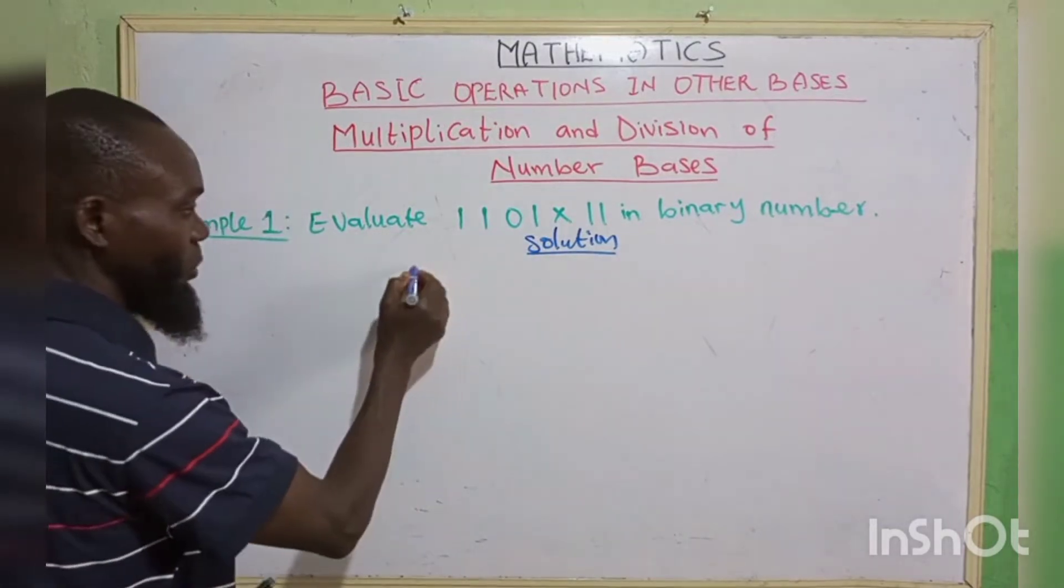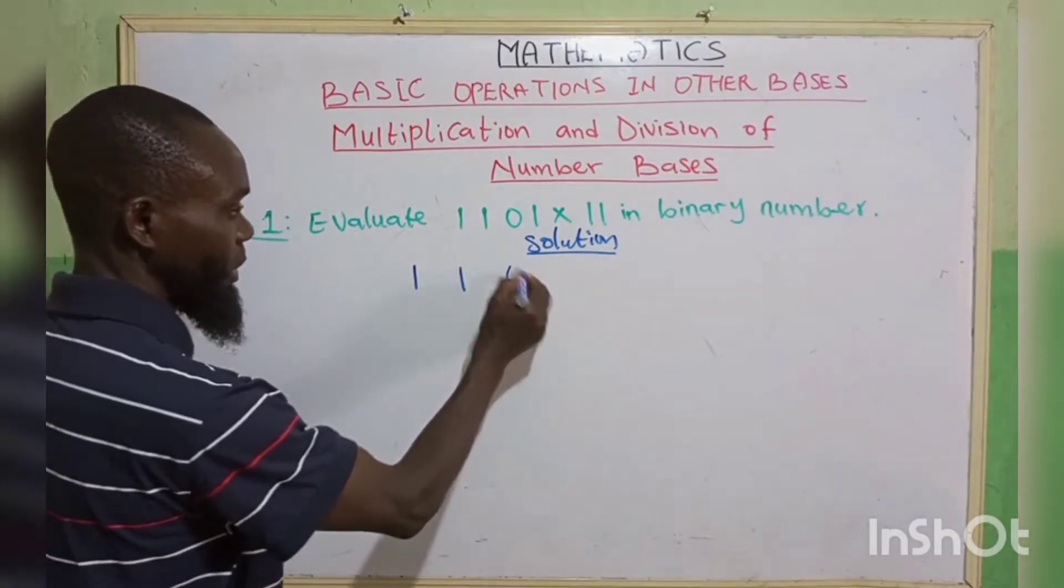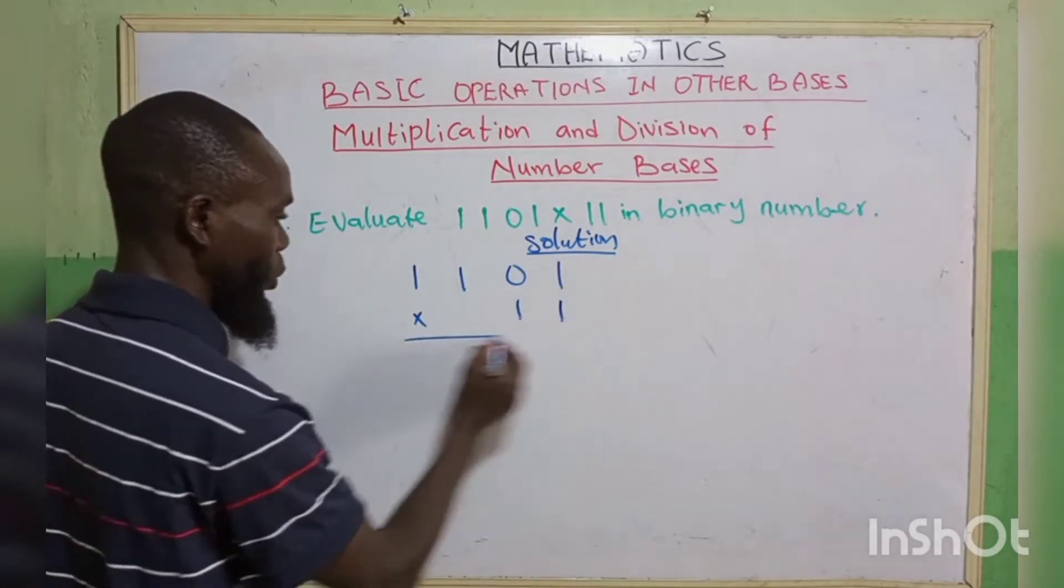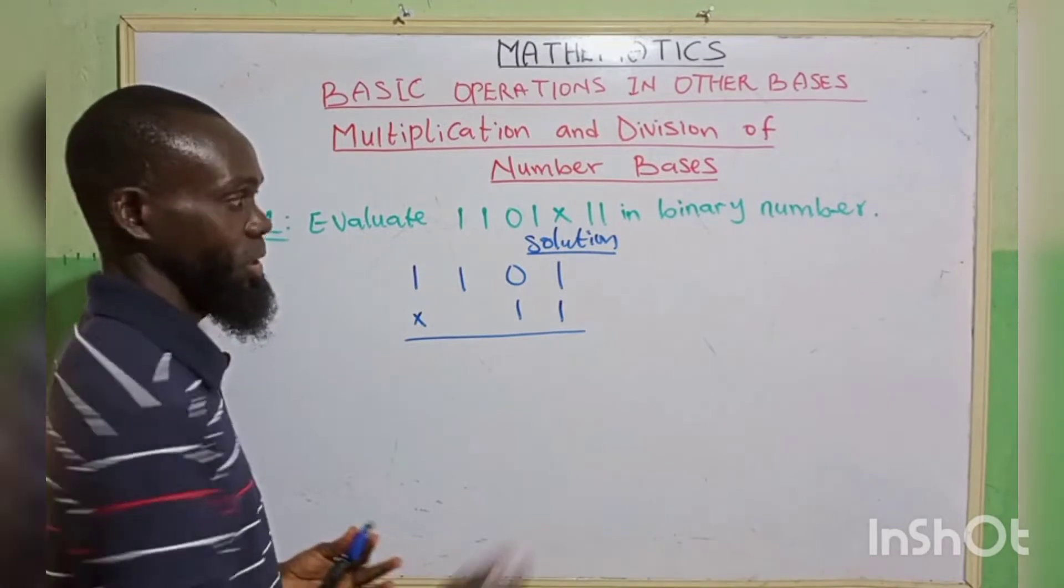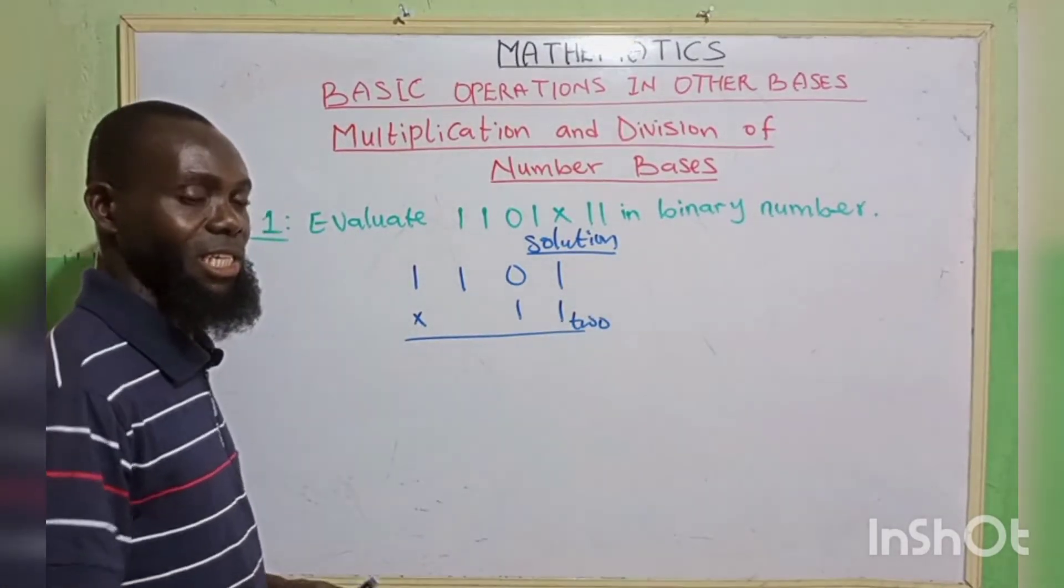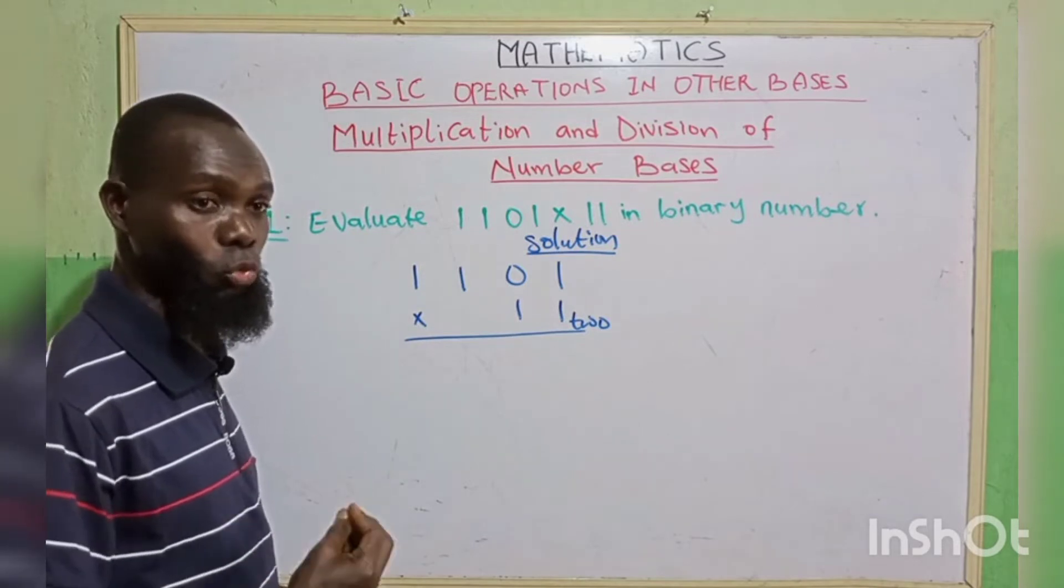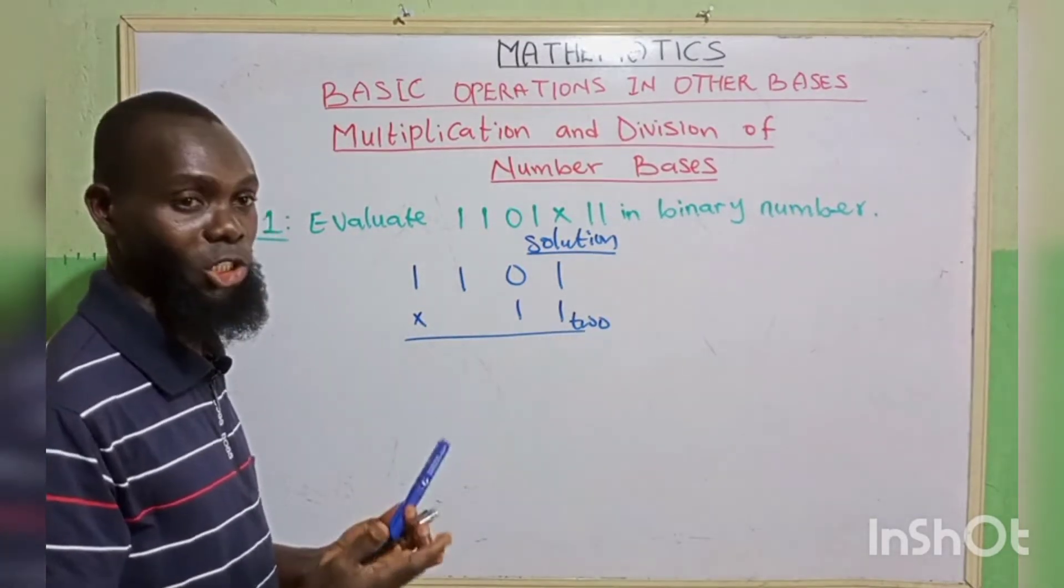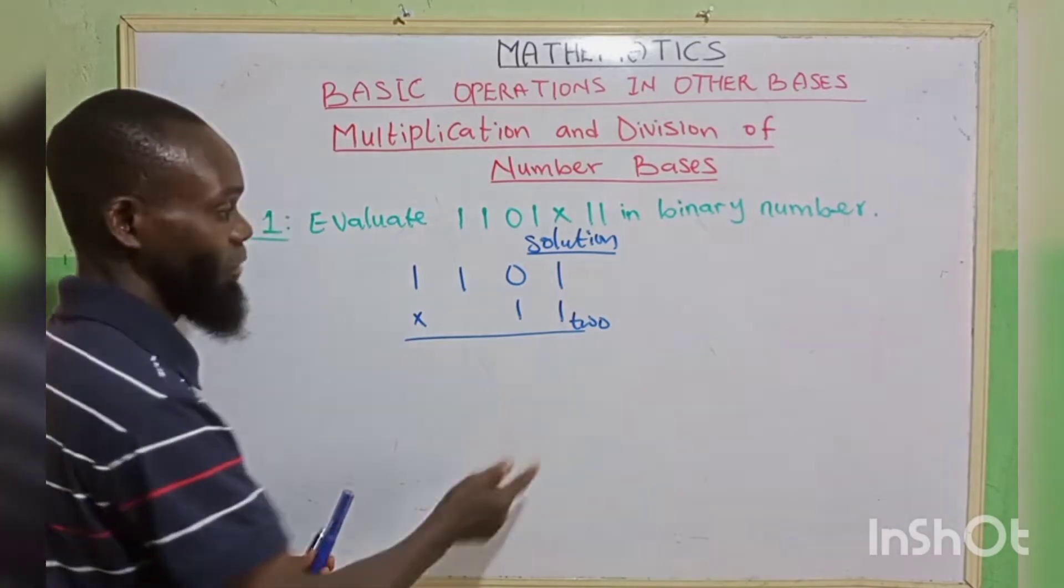So we have 1101 multiply by 11. So we undergo our number multiplication. This is in base 2, which is binary. And don't forget, if your number is up to 2 or above this base 2, we're going to undergo the number operation we did in addition and subtraction. So let's move on.